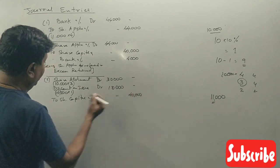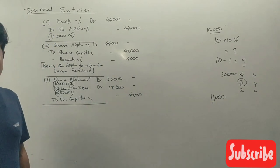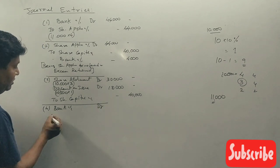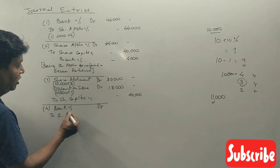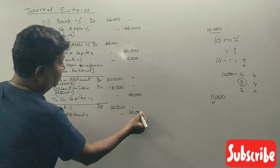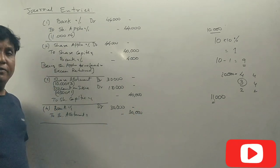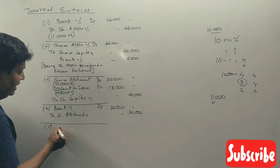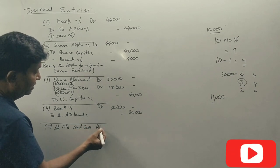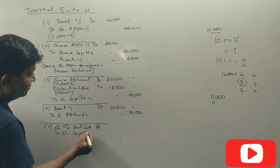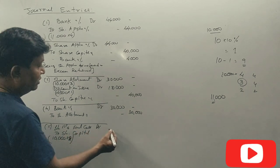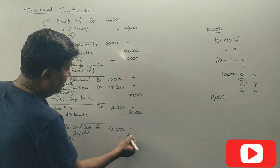Bank Account debit to Share Allotment Account 30,000. Share First and Final Call Account debit to Share Capital Account, 10,000 shares at 2 rupees equals 20,000.